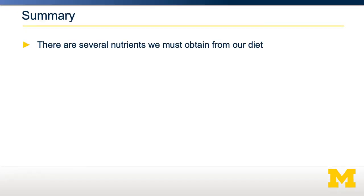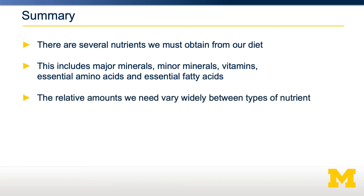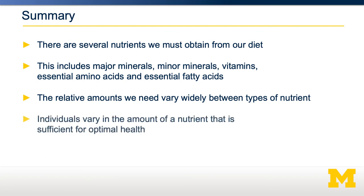In summary, there are several nutrients that we must obtain from our diet, classified as vitamins, minerals, amino acids, and fatty acids. The relative amounts we need vary widely between nutrient types. Individuals also vary in the amount of a nutrient that is sufficient for optimal health. We currently use population-based averages to describe how much of a nutrient is sufficient for a given person.